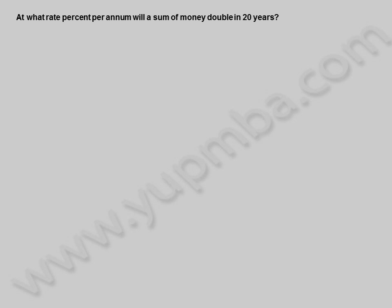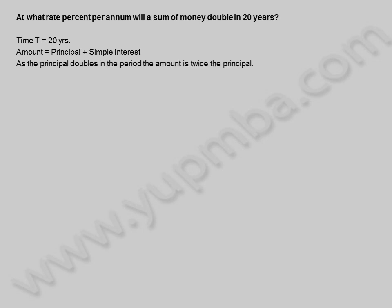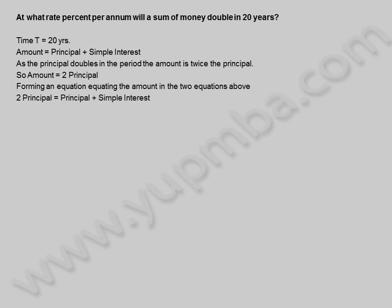Let us see another example. At what rate percent per annum will a sum of money double in 20 years? Time T is equal to 20 years. Amount is equal to principle plus simple interest. As the principle doubles in the period, the amount is twice the principle, so amount is equal to 2 times principle. Forming an equation: 2P equals P plus simple interest, so principle is equal to simple interest.